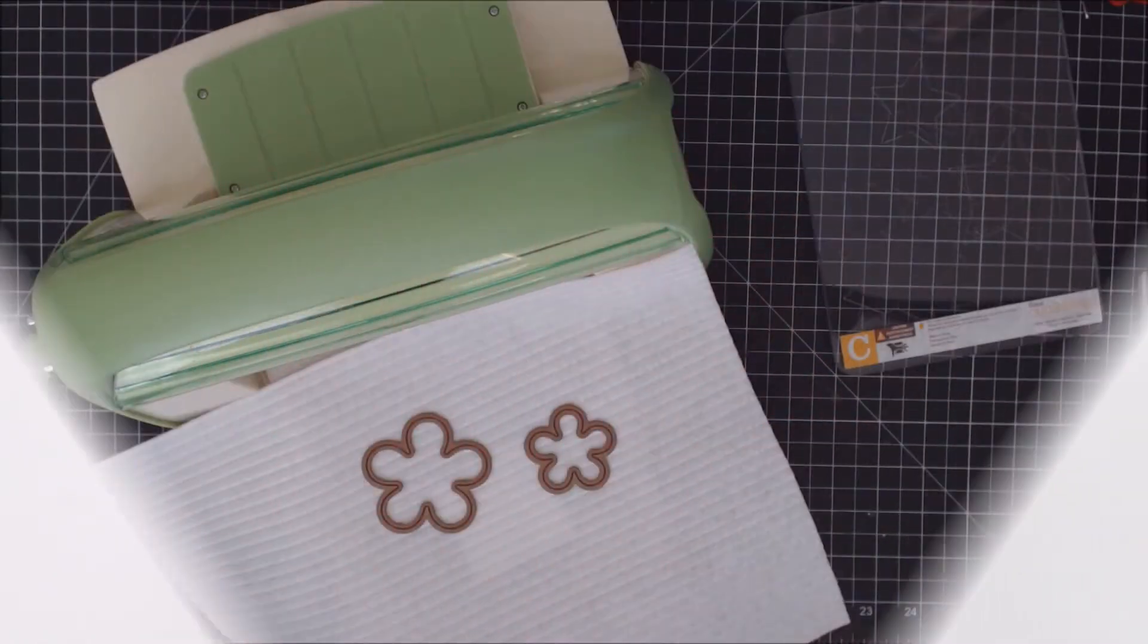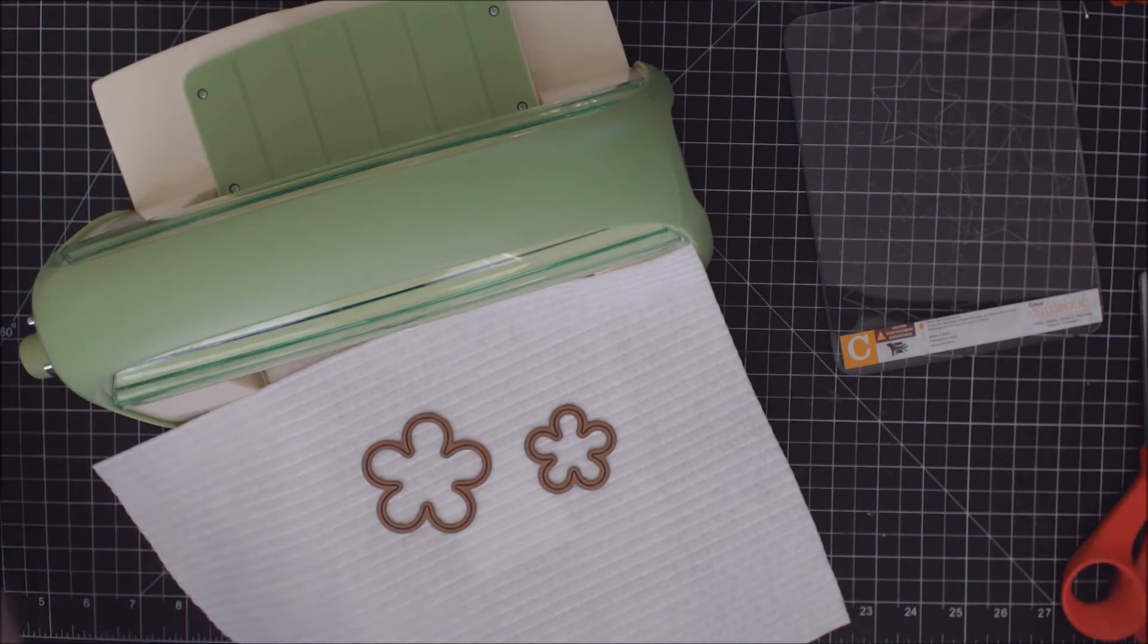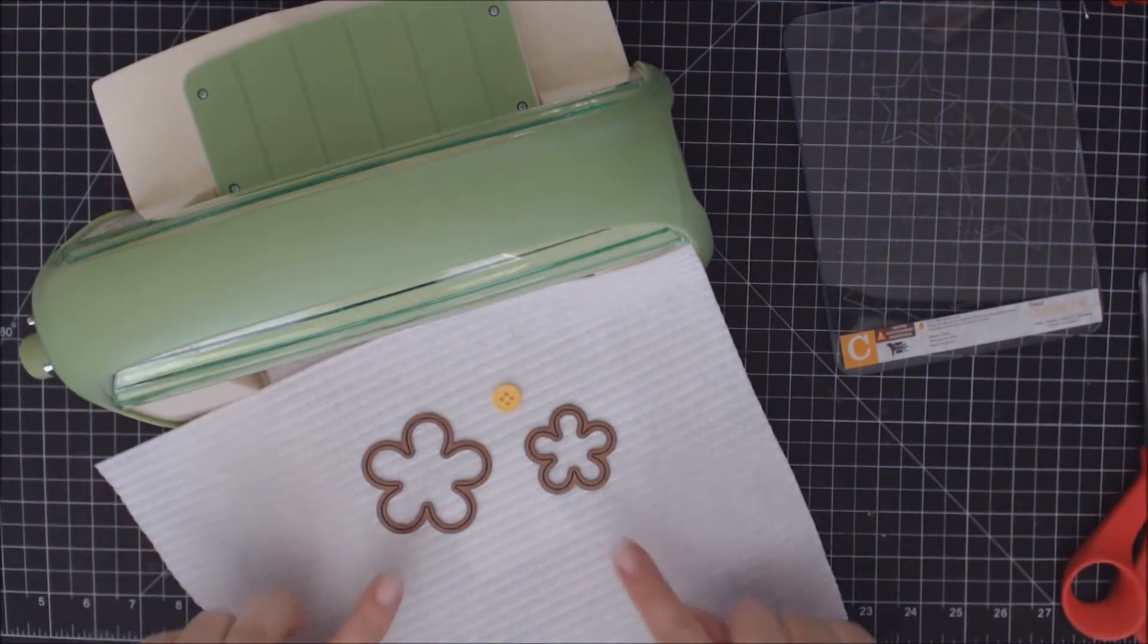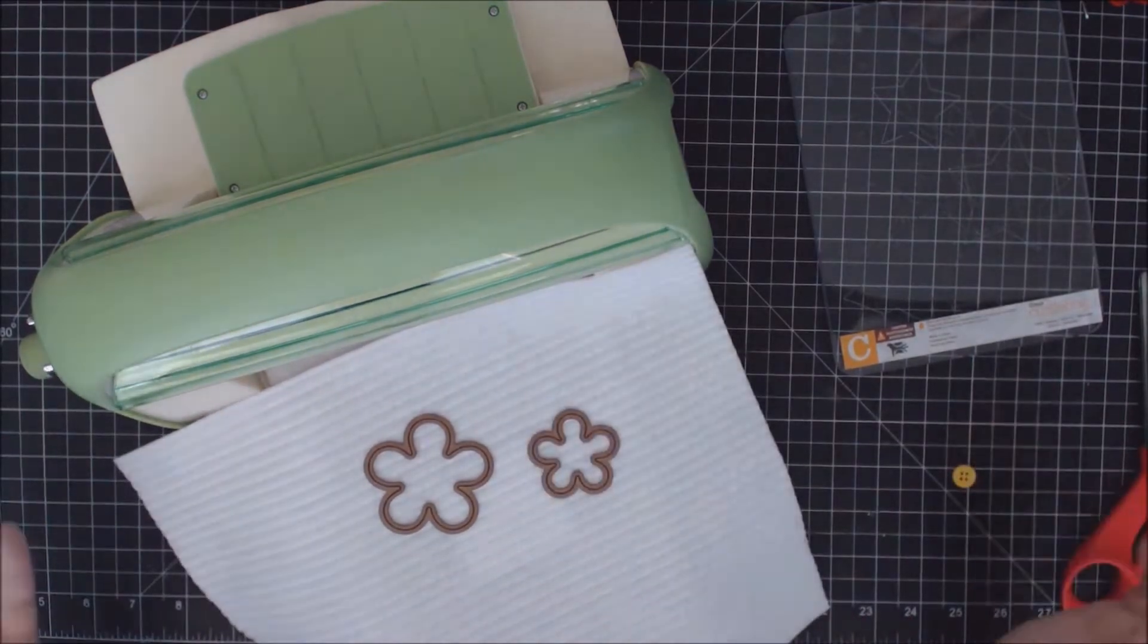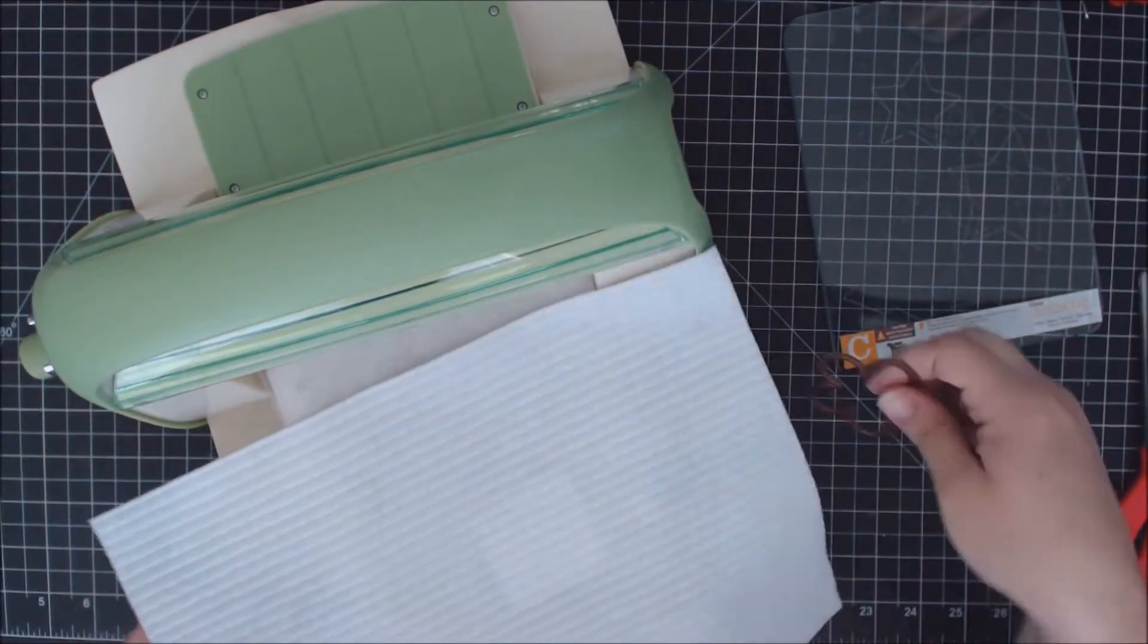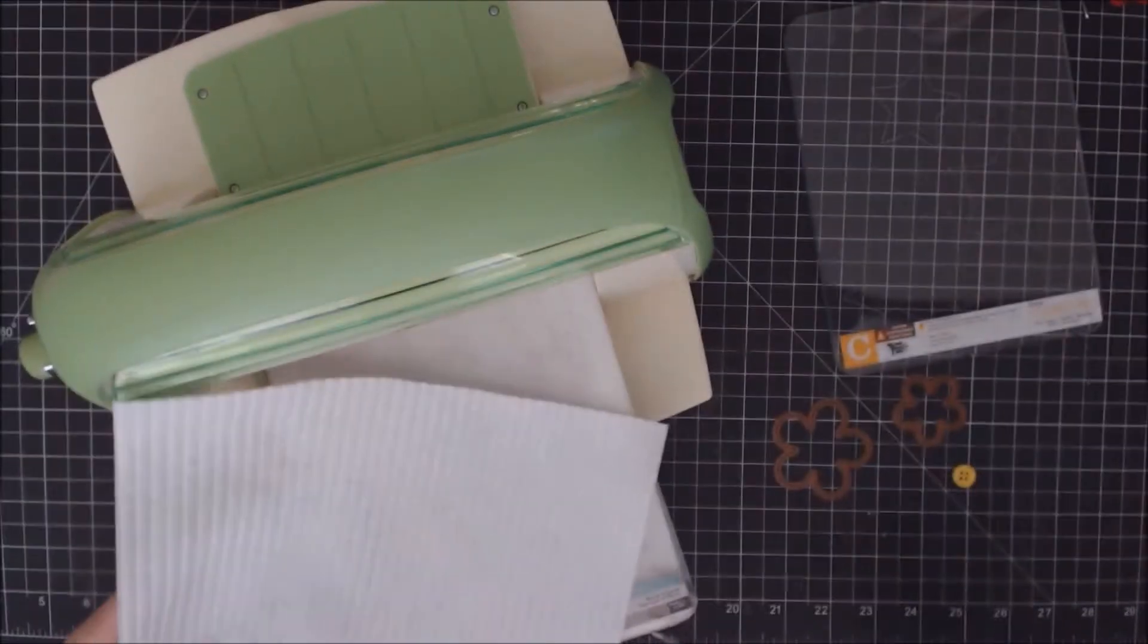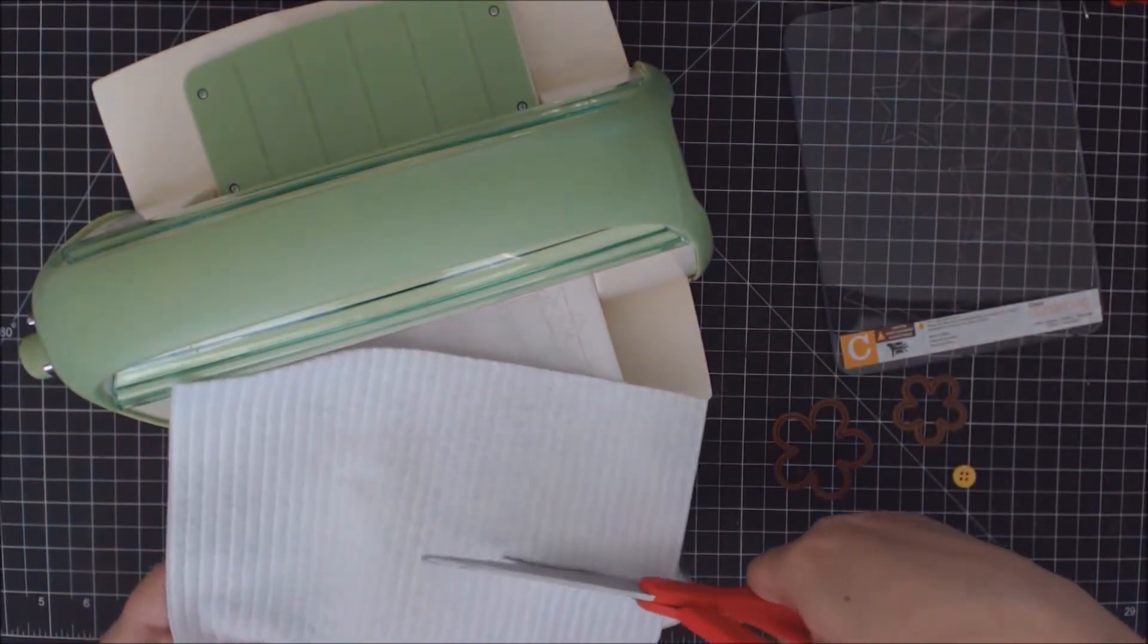Swap number three is creating a layered flower with a cute little button and some thread. As you can see, the fun little button is like a little daisy. So I've cut out two flowers. You could freehand these flowers if you would like to. And the felt I'm working with is a white corduroy.